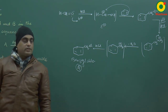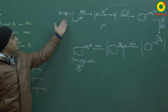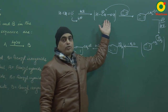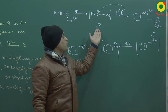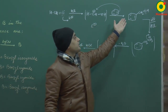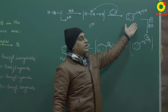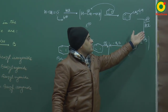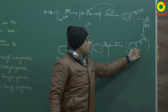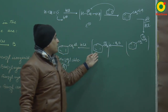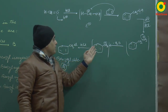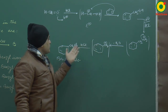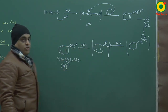Formaldehyde को HCl से treat किया तो एक carbocation बना। यह carbocation एक electrophile है जो benzene पर attack करके benzyl alcohol बनाता है। लेकिन benzyl alcohol in presence of HCl will not be stable and it will be converted to a carbocation by removal of H2O, and this carbocation is attacked by HCl again to give benzyl chloride.